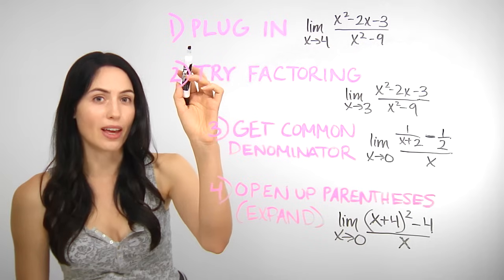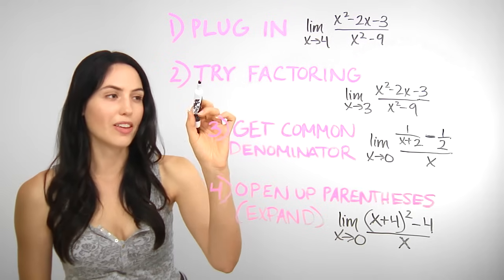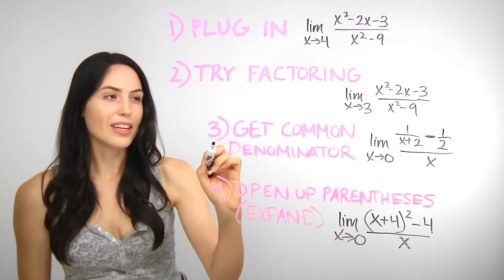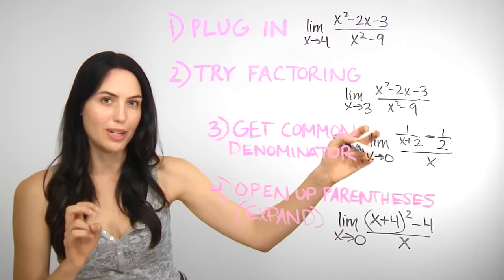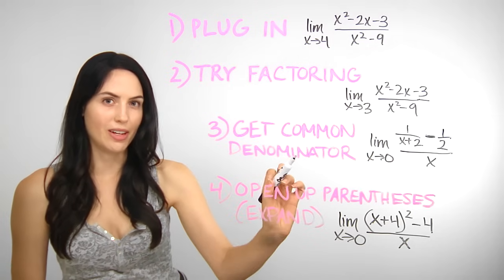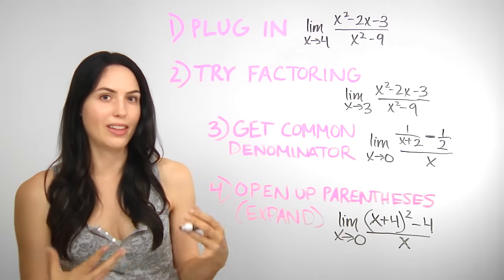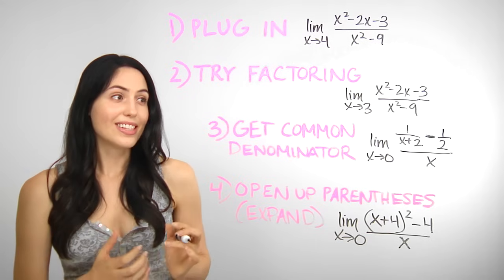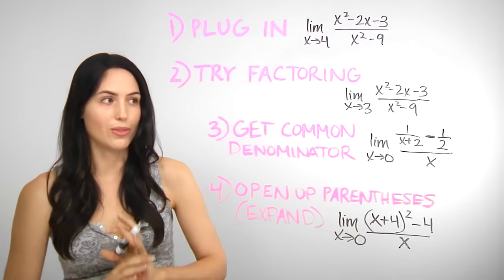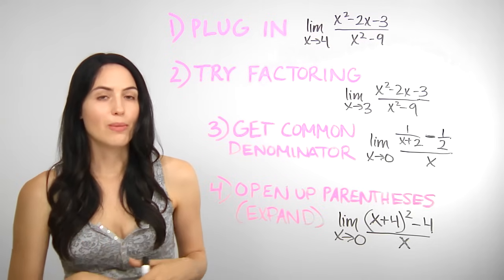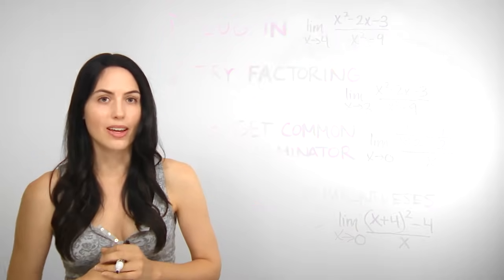The first strategy is to plug in, if you can. If you can't, try factoring, if possible. If not, see if you can get a common denominator — that means if you have something that looks like a fraction within a fraction, a complex rational expression, you might be able to get a common denominator. If not, see if you can expand: open up parentheses, expand, simplify, and then find the limit. These four cases cover most of the limit problems at finite values that you would get — ninety percent of them. But there are a few oddball, miscellaneous, misfit cases that come up.